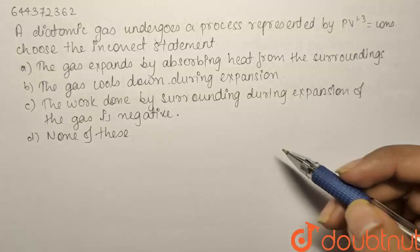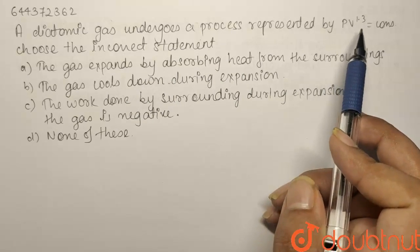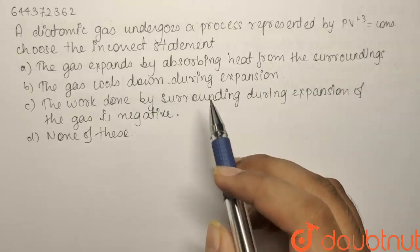I have a question from chapter thermodynamics. A diatomic gas undergoes a process represented by PV to the power 1.3 constant. We have to choose the incorrect option.